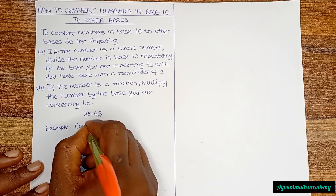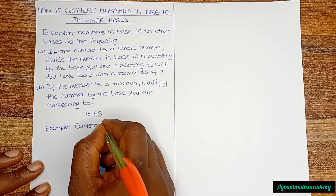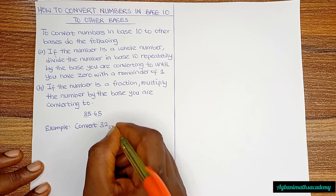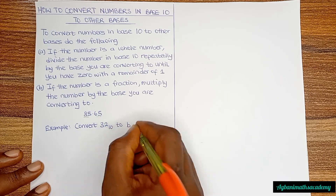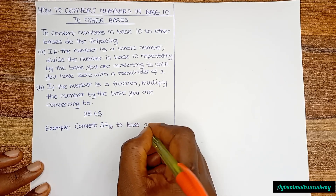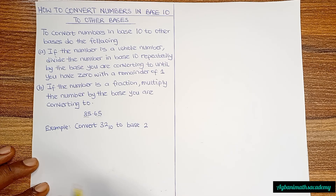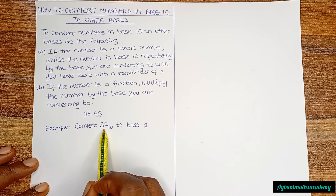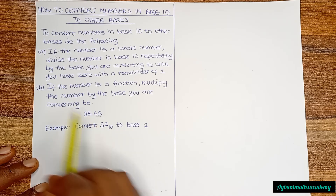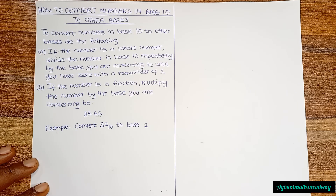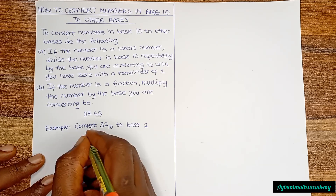Let's look at an example. Convert 32 base 10 to base 2. Since this value is a whole number, we are going to apply rule A — we divide repeatedly by the base we are converting to. We are converting to base 2, so let's do that.